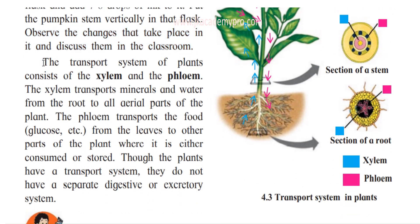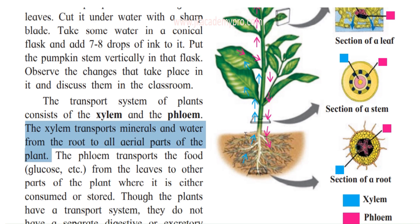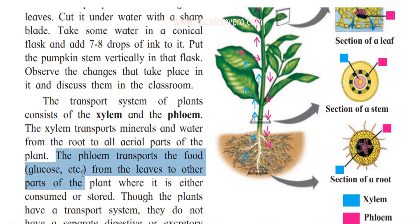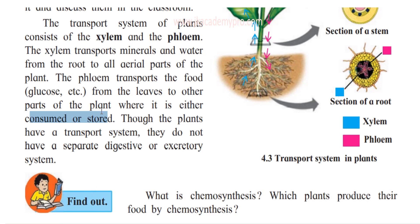The transport system of plants consists of xylem and phloem. The xylem transports minerals and water from the root to all the aerial parts of the plant — roots grow underground, and the aerial parts grow above the ground. Xylem is tubular in form. The phloem transports food — such as glucose — from the leaves to the other parts of the plant, where it is either consumed or stored. You can follow the picture given alongside showing the sections of the leaf, stem and root.